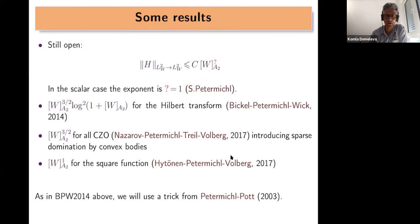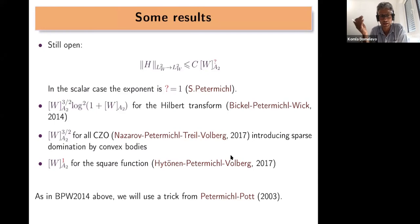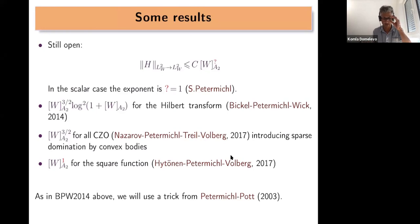In the vector case, there are a series of relatively recent results for the Hilbert transform or for general Calderón-Zygmund operators. There is one operator, namely the square function, for which it is known that this bound happens with a linear dependence on the A2 characteristic.